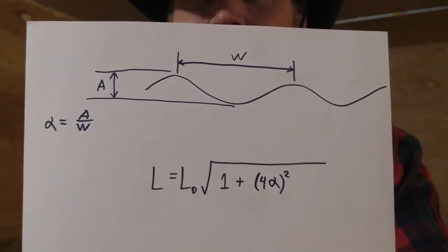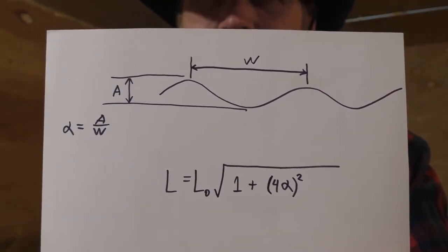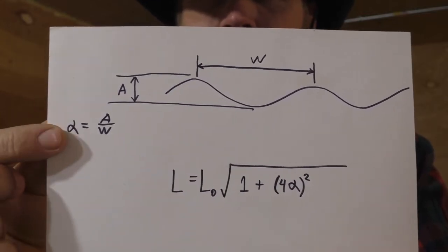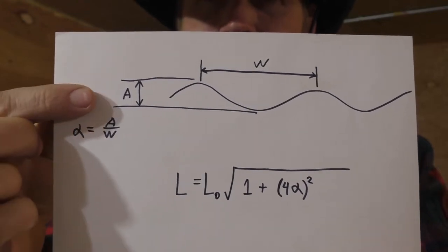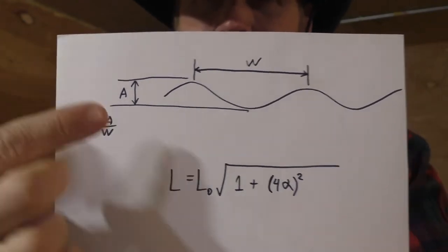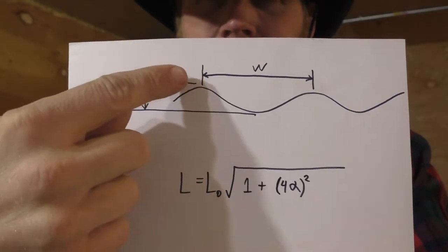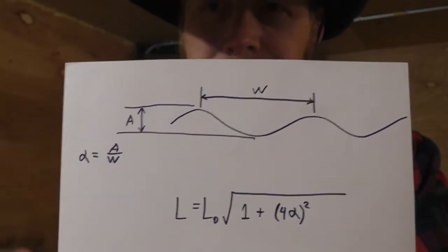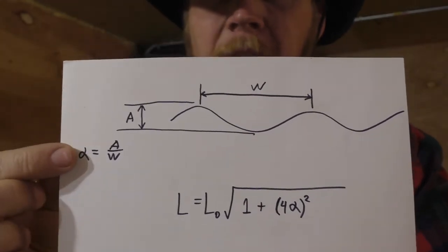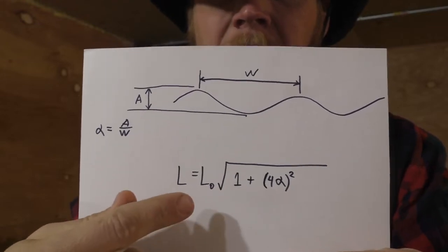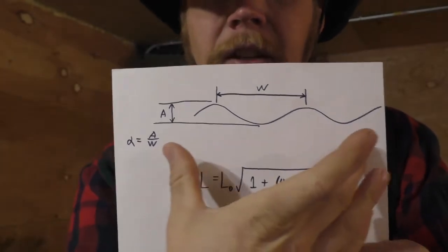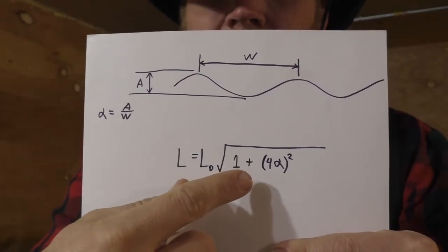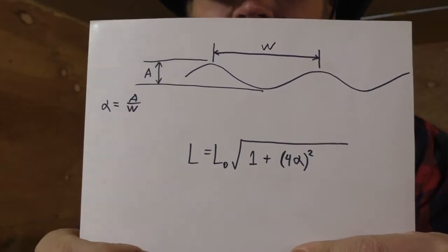Hopefully you can read that on the camera there. To find the length of a sinusoidal curve, first we need to find the amplitude ratio, which is just the vertical height of the sinusoid — from the base of one trough to the height of the peak — divided by the wavelength. Then with the amplitude ratio, we can calculate the length of the curve as the overall linear length times the square root of one plus four times the amplitude ratio quantity squared.